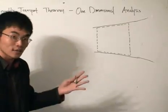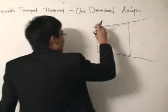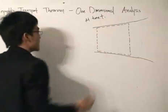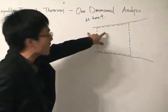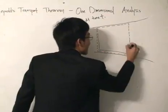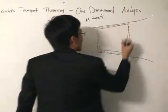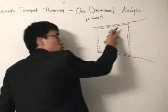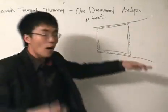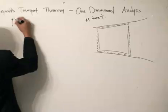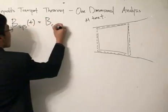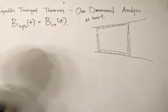For Reynolds' Transport Theorem, we're going to connect the two. We start off at a certain time T. At time T, the system of particles is going to coincide with the control volume. We set it such that the system of particles coincides with the control volume — as you can see, the system of particles is inside the control volume, that's why they coincide. And if they do coincide, obviously the extensive property has to be the same. So the extensive property of the system at time T equals the extensive property of the control volume at time T.